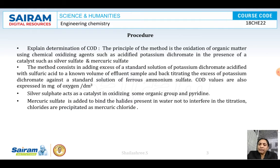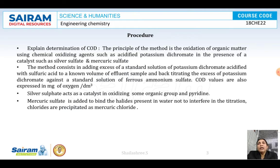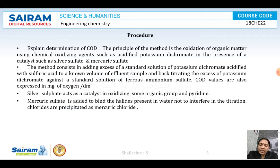When we add mercuric sulfate, it reacts with chloride to form mercuric chloride, binding the chloride ions so they do not interfere in the reaction. Then add 5 to 6 drops of ferroin indicator - you will get a blue-green color. Titrate against the standard FAS solution taken in the burette until you get a reddish brown color, which is the end point.